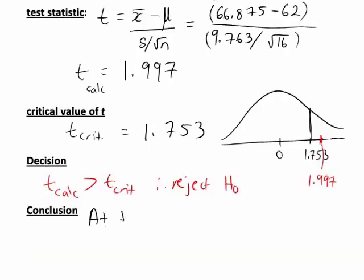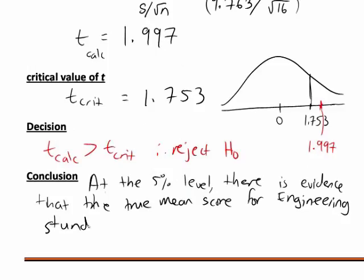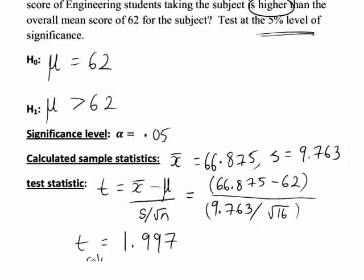If we're writing that conclusion, we can say that at the 5% significance level, there is evidence that the true mean for engineering students in the statistics subject is indeed greater than 62. That is, the difference between the observed sample mean for engineering students and 62 is more than could be reasonably attributed to sampling variability.